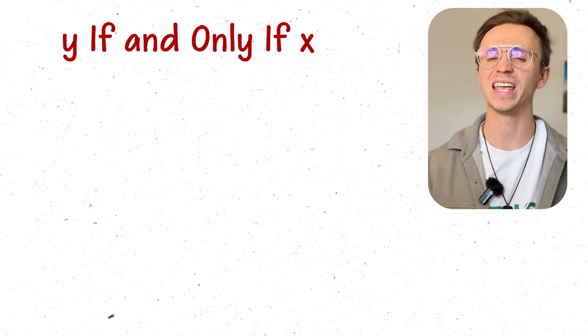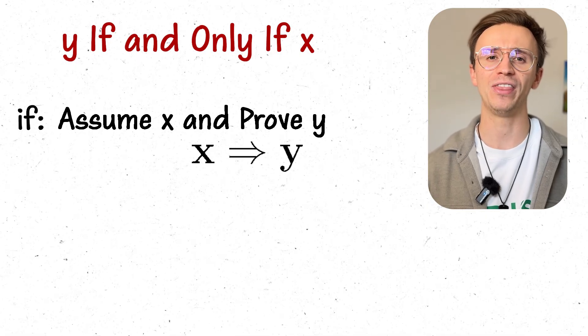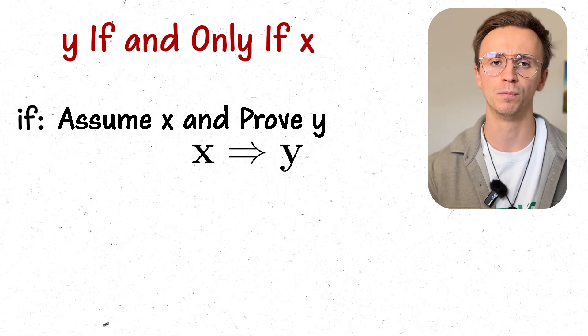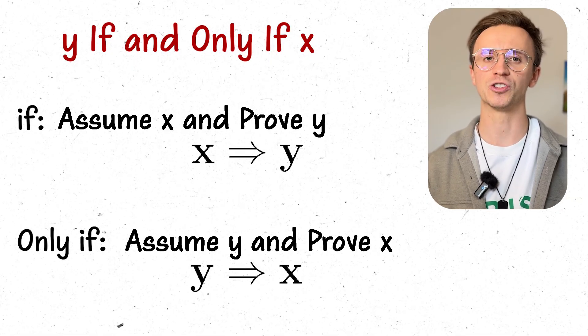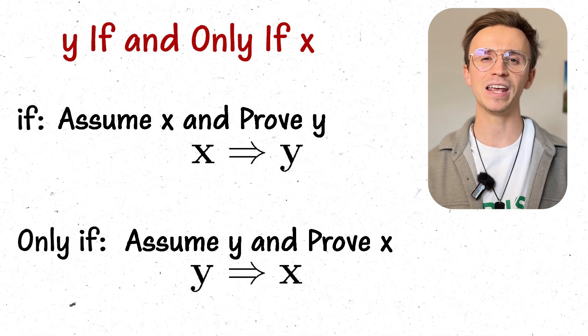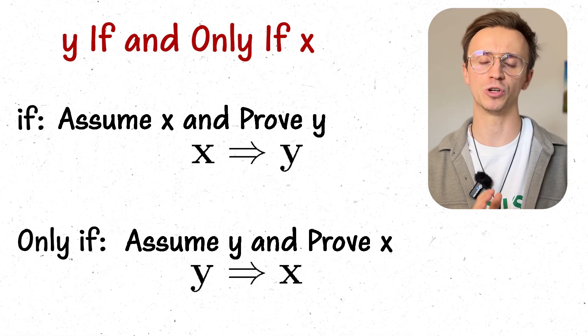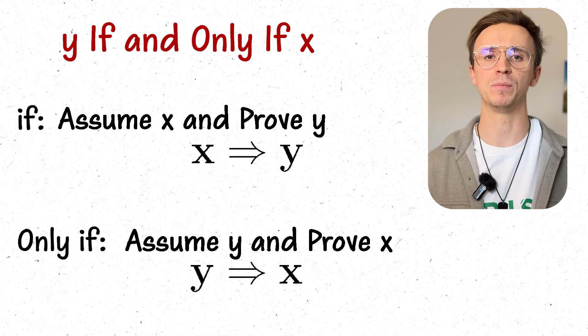So how should you approach an exam question about if and only if? If asked to prove y if and only if x: to prove the if part, assume x is true and prove y must be true — to disprove it, use a counterexample. To prove the only if part, assume y is true and prove x is true — again, disprove with a counterexample. If both directions work, it's an if and only if statement. If they ask you to prove 'if', that's one direction; 'only if' is the other; if and only if needs both directions.